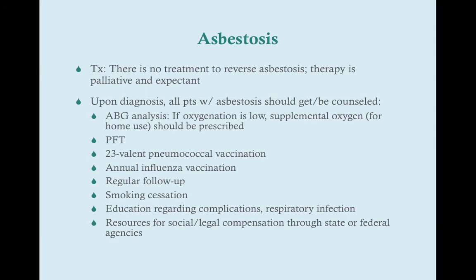Treating asbestosis — there's really no definitive treatment. Nothing can be done to reverse asbestosis; once the damage is done, it's done. The therapy is going to be palliating the symptoms and expectant therapy for complications that may come up. Once a patient has been diagnosed with asbestosis, they should get an ABG analysis, and if their oxygenation is low, they should be given supplemental oxygen for home use. Pulmonary function tests should be done to get a baseline of lung volumes. The 23-valent pneumococcal and annual influenza vaccination should be given to decrease complications.